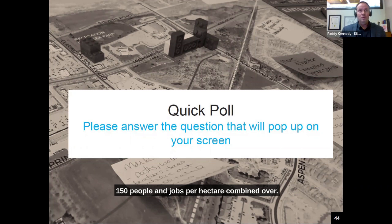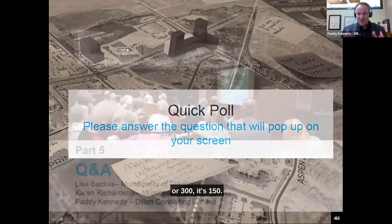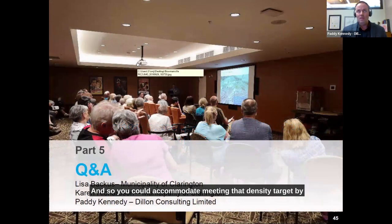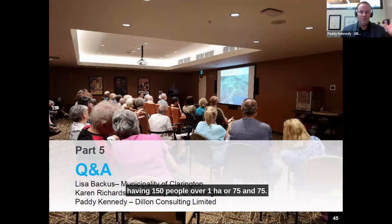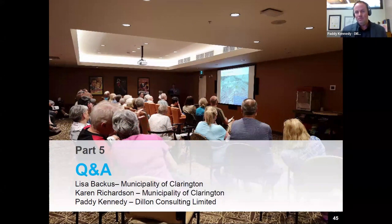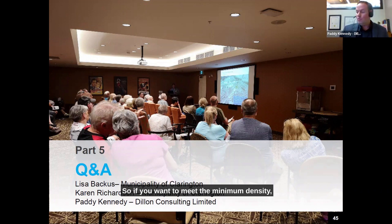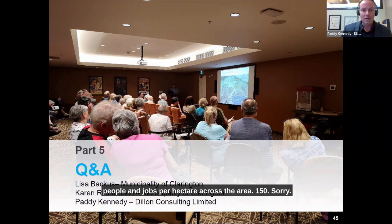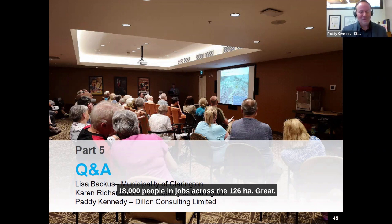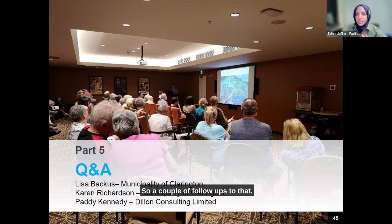The simple answer is it's 150 people and jobs per hectare combined — it is not 150 plus 150, so 300. It's 150 total. You could meet that density target by having 150 people over one hectare, or 75 people and 75 jobs — that sort of thing. The area is approximately 126 hectares, so to meet the minimum density we're talking about a combination of about 18,000 people and jobs across the 126 hectares.